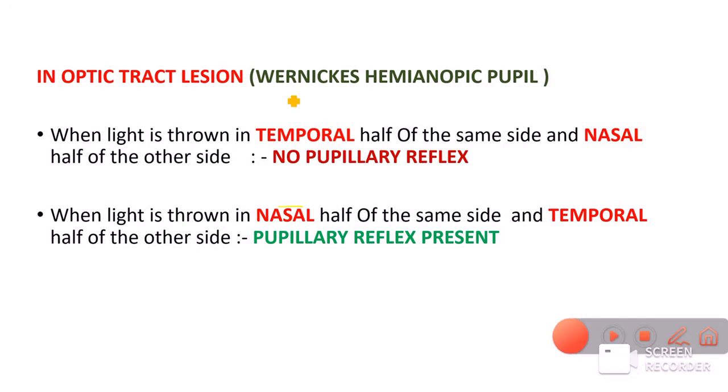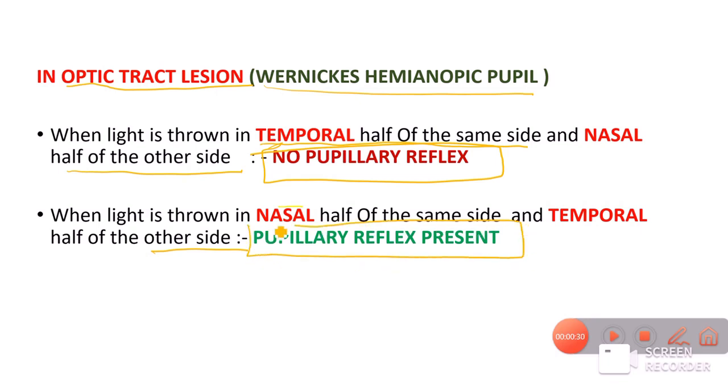Therefore in Wernicke's hemianopic pupil, when the optic tract lesion is present, when light is thrown in the temporal half of the same side and nasal half of the other side there will not be any pupillary reaction. Why? Because we are throwing the light into the blind parts of the retina. Similarly, when the light is thrown in nasal half of the same eye and temporal half of the other side, we are throwing light into the side of the eye which is actually normal and therefore we will see pupillary reflex. This is called Wernicke's hemianopic pupil.